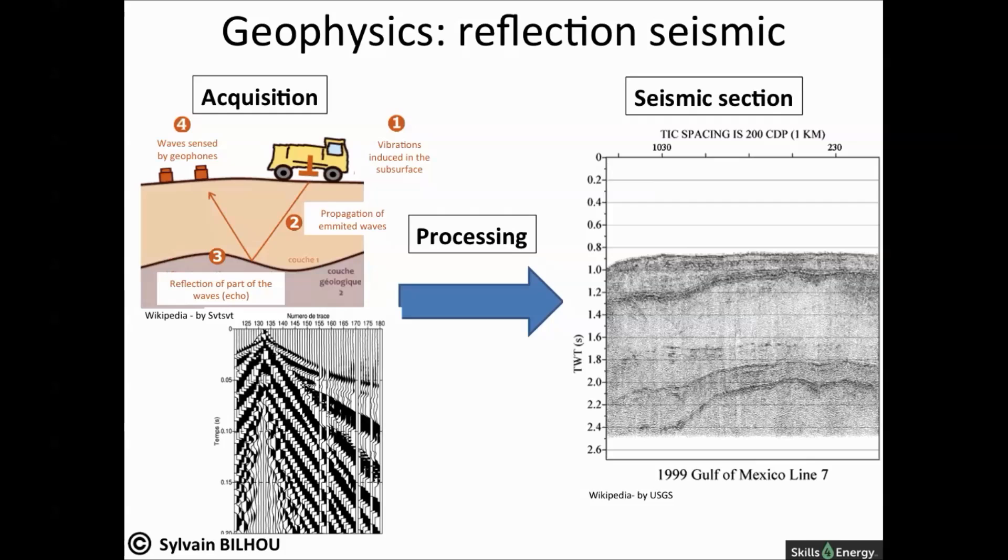Then the shot location is moved along and the process is repeated. Typically, the recorded signals need significant amounts of processing before they are ready to be interpreted. Modern seismic reflection surveys contain large amounts of data and so require large amounts of computer processing, often performed by supercomputers or computer clusters.